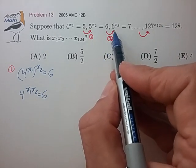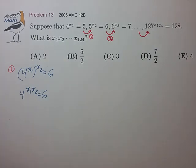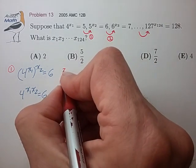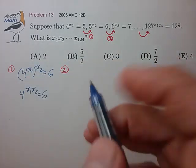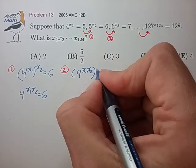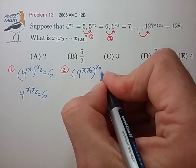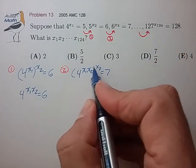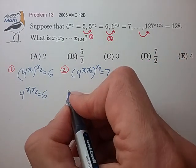Let's substitute this into this third expression. Let's write this as the second substitution, and we'll have that 4 to the x1 x2 x3 is equal to 7. Again, using the product rule for nested exponents.